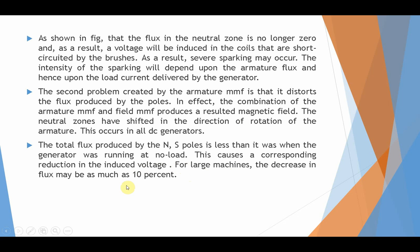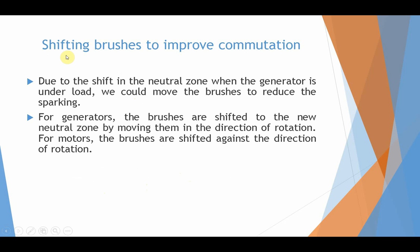For large machines, the decrease in flux may be as much as 10%. To improve commutation, we can shift the brushes. Due to the shift in the neutral zone when the generator is under load due to armature reaction, we move the brushes to reduce sparking. For a generator, the brushes are shifted to the neutral zone by moving them in the direction of rotation.